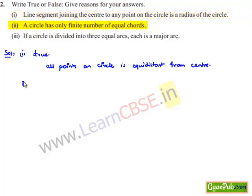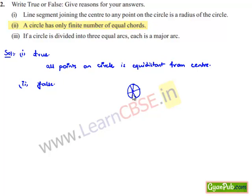Moving on to the second bit: a circle has only a finite number of equal chords — that is false. Because, for example, if we consider a chord passing through the center, which is nothing but the diameter, since a circle has an infinite number of points on it, we can draw an infinite number of chords passing through the center. Therefore, we cannot say there will be a finite number of equal chords on the circle.